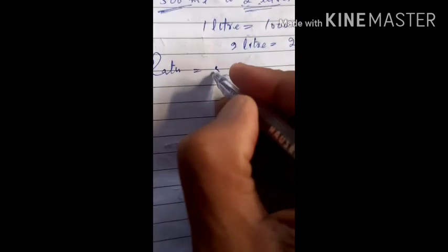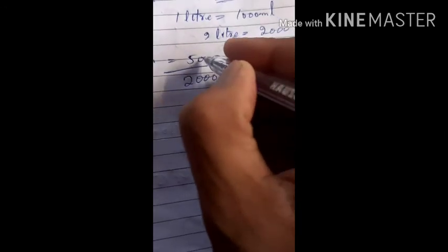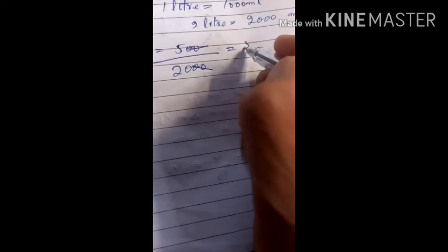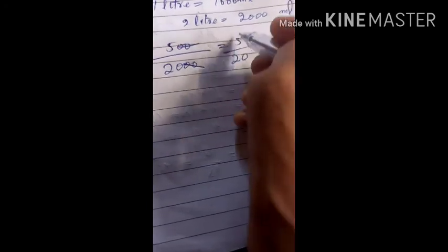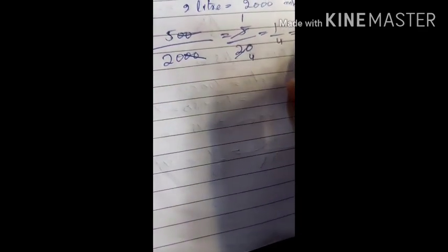So the ratio will be 500 divided by 2000. Cancel two zeros here and two zeros here, leaving 5 divided by 20. Then divide by 5: 1 by 4, which is equal to 1 is to 4. So this becomes the ratio.